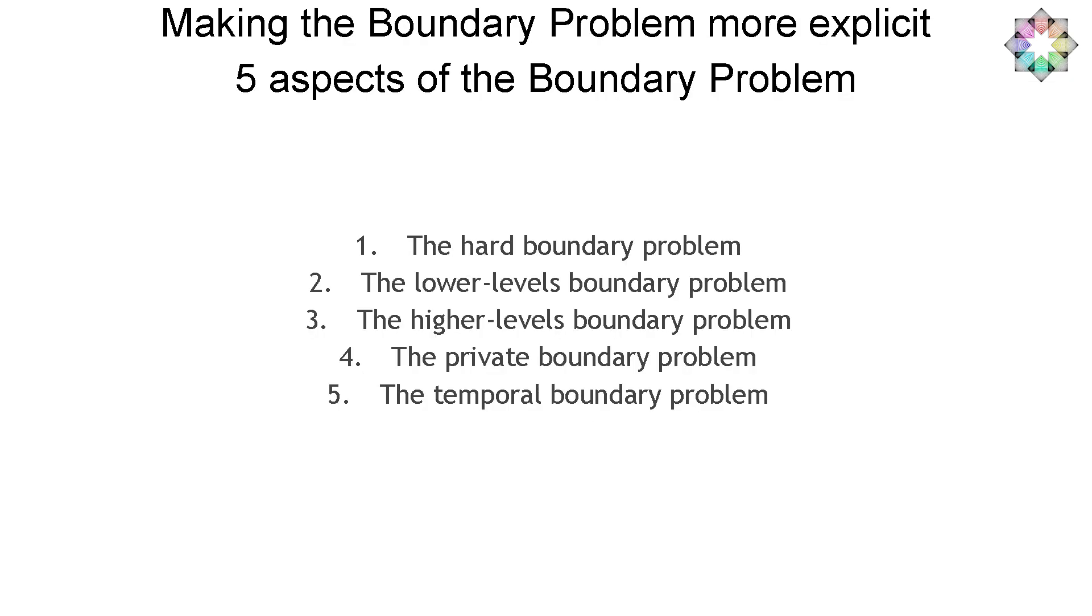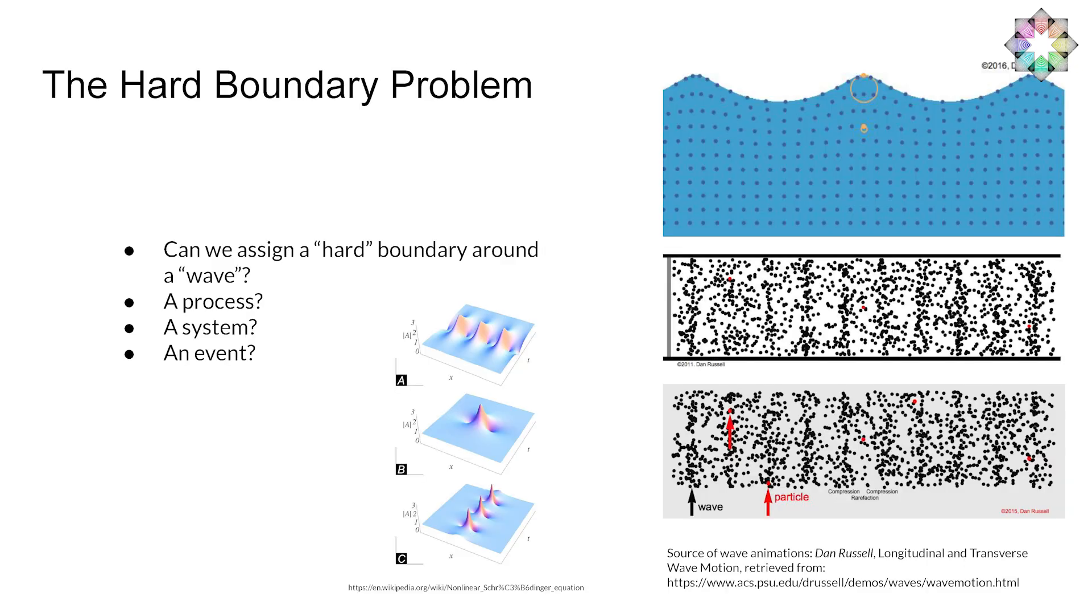The way we formalize the boundary problem more concretely was through these five sub-problems. The hard problem of consciousness might be unsolvable, but if you break it down into sub-problems, you can really make conceptual progress. We don't talk about the hard problem of matter these days. We talk about electromagnetism and gravity and momentum and things like that. So the boundary problem sounds very unsolvable, but we think you can make a lot of progress when you start to really break it down. This is the sub-problems we came up with. A very important one is the hard boundary problem.